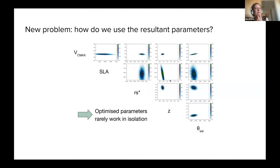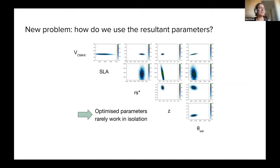This speaks more broadly to the issue in parameter estimation: none of the parameters really exist in isolation. The parameters you find exist in a space constrained by all the other parameters, with many correlations between them. If we try to use one parameter without the others, we won't get as good a fit and we'll be neglecting a lot of information. Removing k_soil_c takes away information that has been passed to that parameter, and the other parameters probably won't work as well.